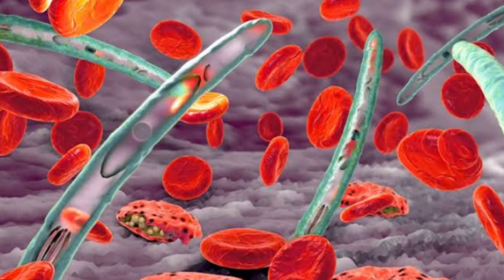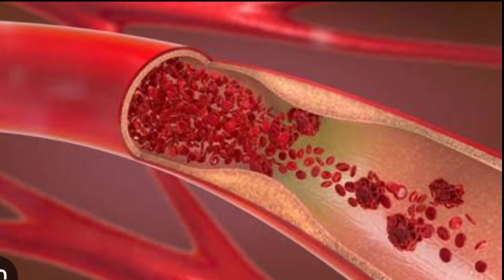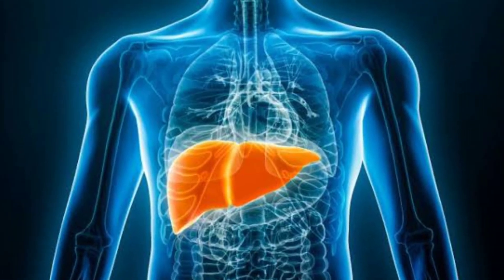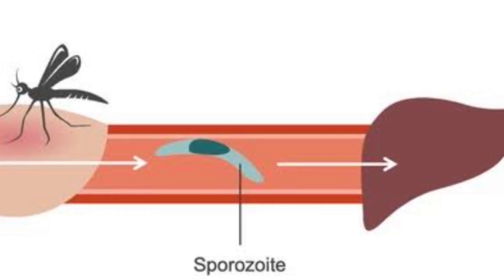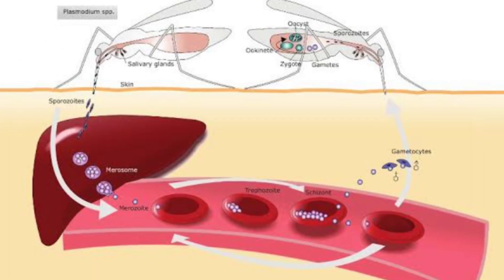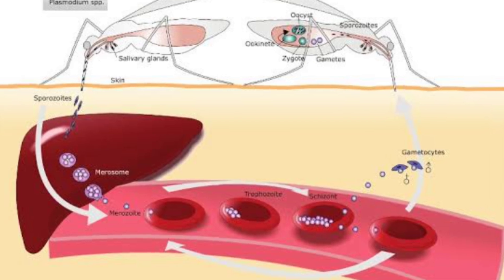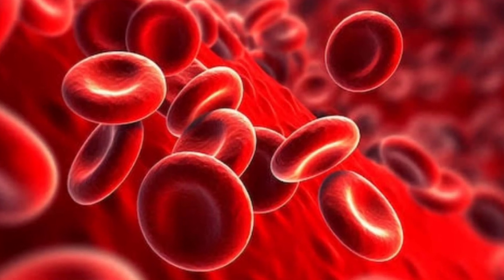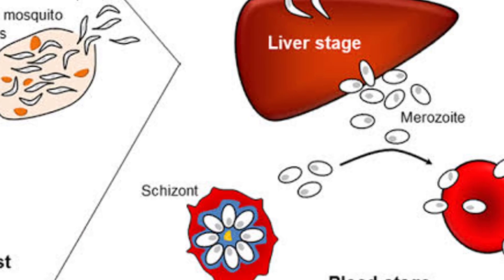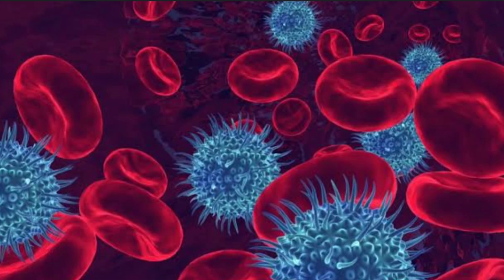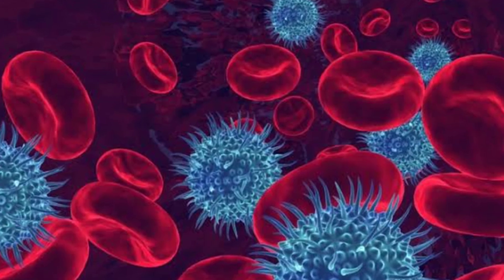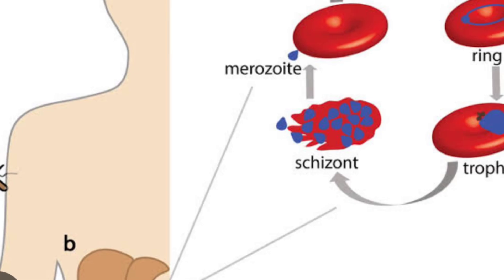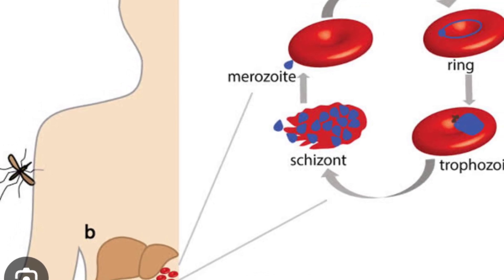Once the parasite enters the bloodstream, it reaches its target: the liver cells. It attacks the liver cells and stays inside for quite a long time without any symptoms, increasing its numbers. After that, it releases back into the bloodstream by bursting out of the liver cells in the form of merozoites.